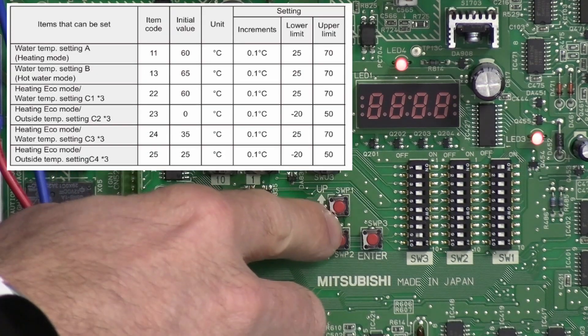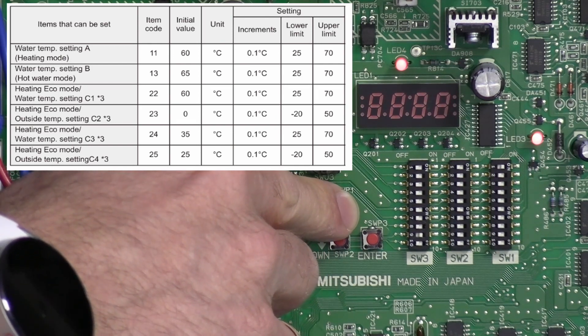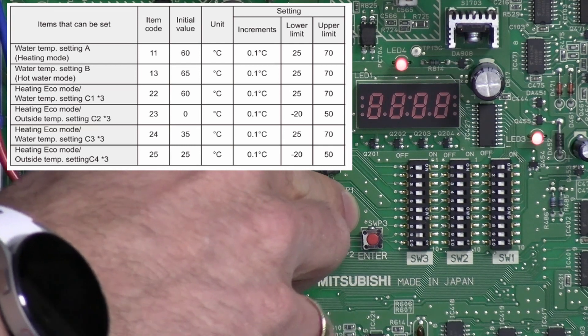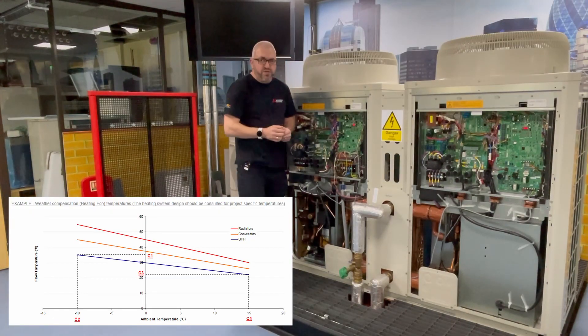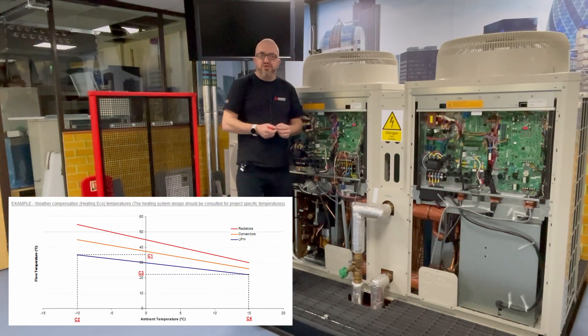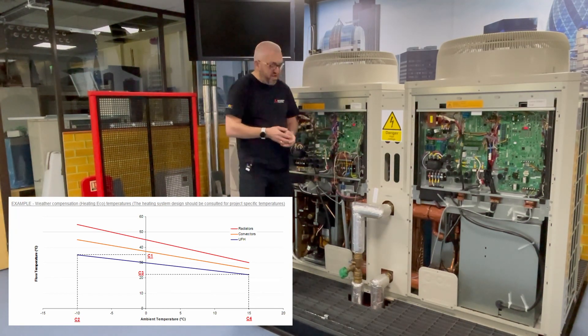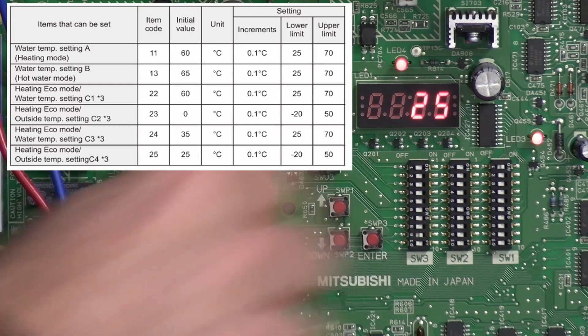So it's currently set to 40, let's increase that up, let's say 45. So we've got a minimum of a 45 degree flow but a maximum of 65. Okay, we now need to tell the system at which ambient temperature we want it to operate at 45, so that's the next item by pressing the select button up to 25.